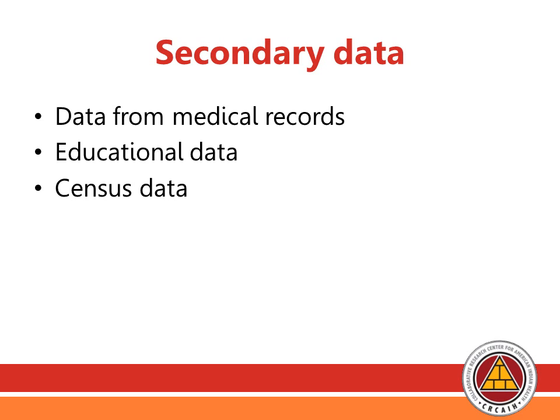Secondary data already exists in some form but without a specific research purpose. A main source of secondary data is medical records, which can contain measurements like height and weight, test results like cholesterol measurements, and information on disease — all without needing to ask anyone directly. Other sources include educational data such as student test scores, or census data containing information on population density and income, which can be repurposed for a research study.